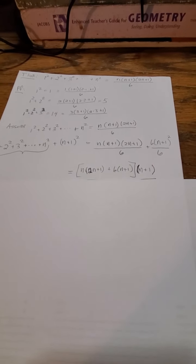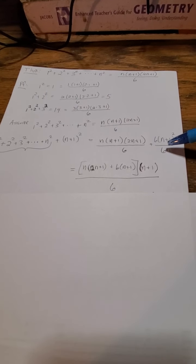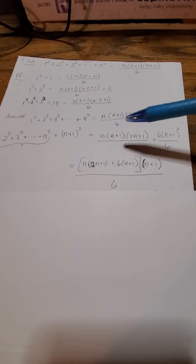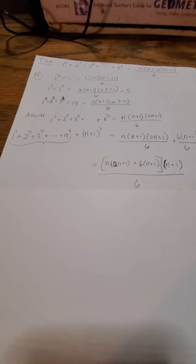Now, I factor out from the top, I factor out an n plus 1. So, I have n plus 1 times n times 2n plus 1 plus 6 times n plus 1. All that over 6.